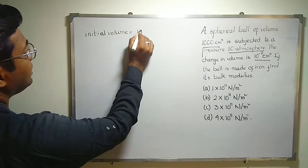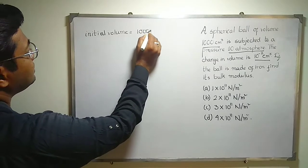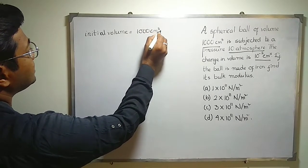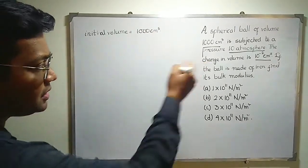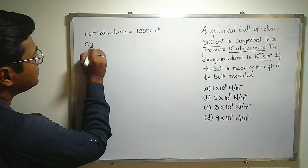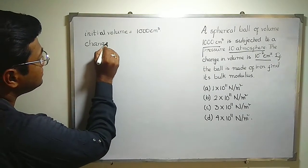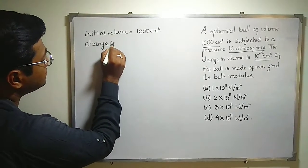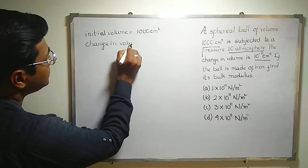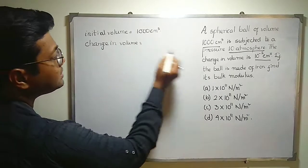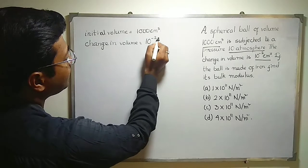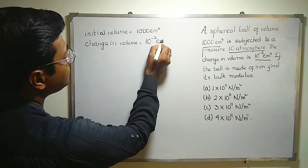Initial volume is 1000 cm³. The change in volume is 10 to the power minus 2 cm³.